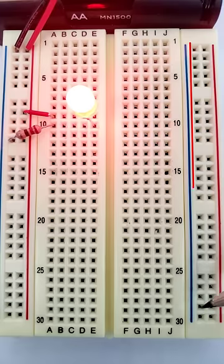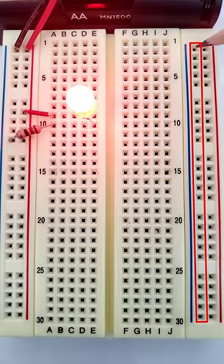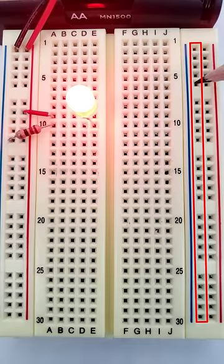Holes are also connected along the long vertical strips called busses on the sides of the breadboard. These holes are connected across the gaps.